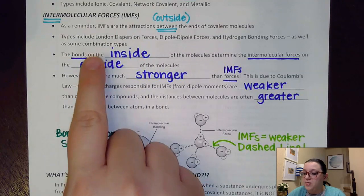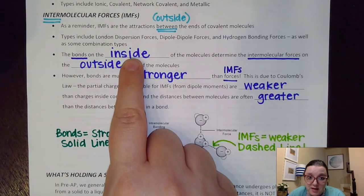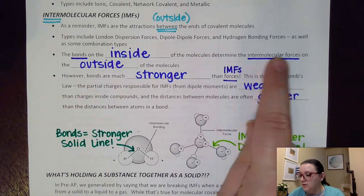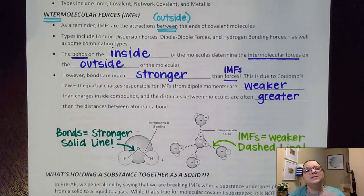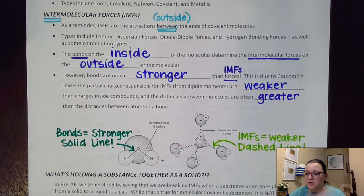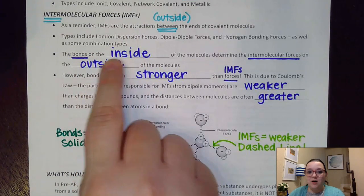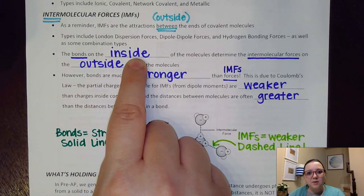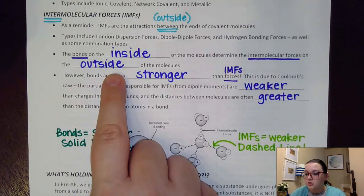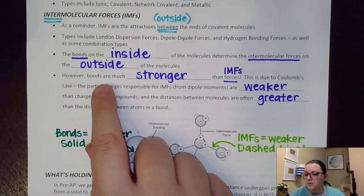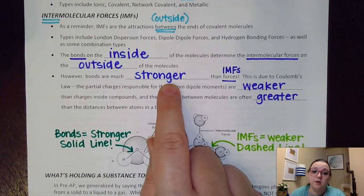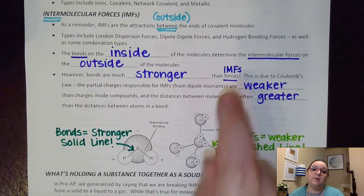We want to know that bonds are on the inside of the molecule, while intermolecular forces are on the outside of the molecules. What's interesting is that one affects the other — what's happening on the inside will impact how the attractions work on the outside. The bonds happening on the inside are much stronger than those IMFs happening on the outside.